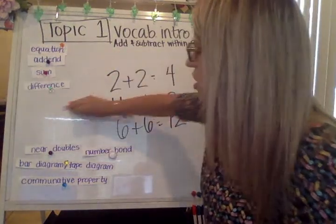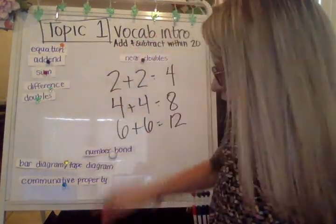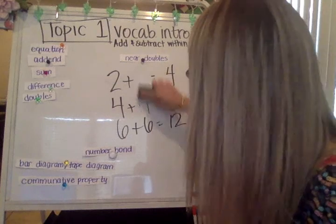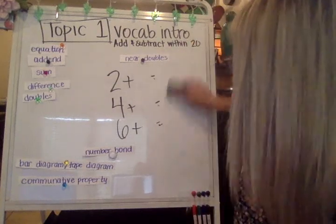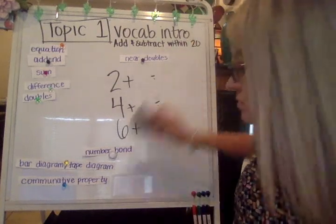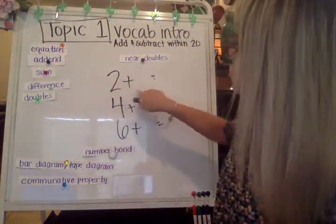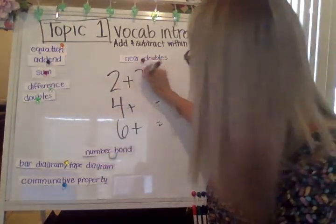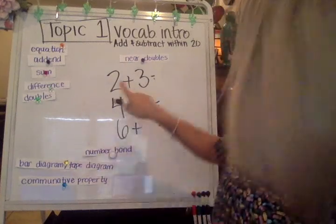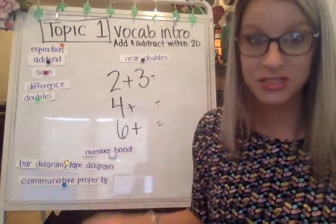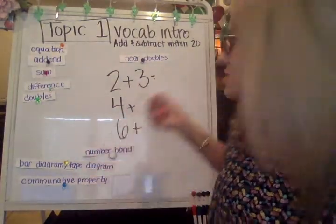Now if I'm talking about near doubles, I want to change just a couple of these, and I'm also going to be changing the sums because the equations are going to change. So two plus three — I would say that is a near double. It's almost just like two plus two, but the three is one more than that.